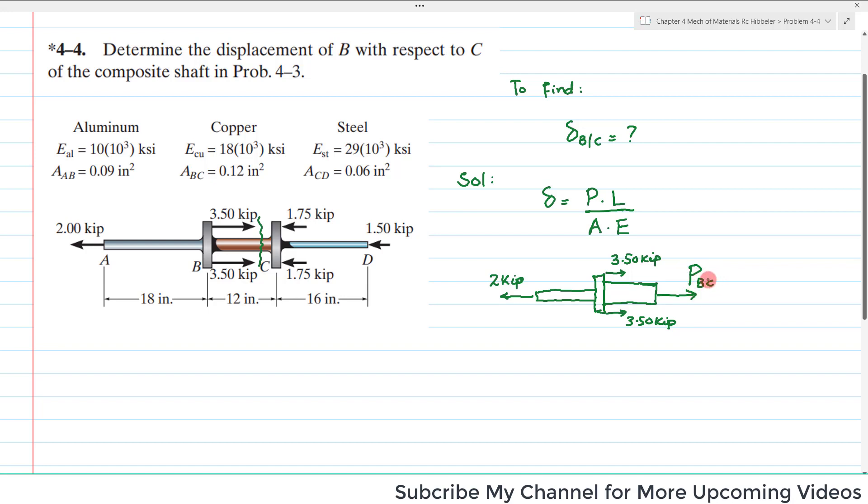Now we do not know P_BC. For that, again you have to see that this is 3.50 and this is 3.50, so total 7 kips in this direction. In order to keep it in equilibrium, we need 7 kips in this direction.